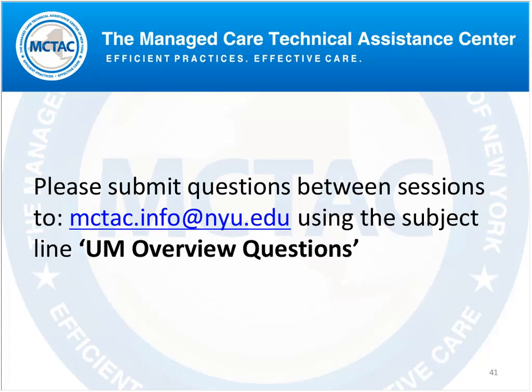Will there be guidelines for intermediate inpatient care that are different from acute care hospitals? If referring to observational status — between an emergency room admission and an inpatient admission — yes, there certainly will be guidelines surrounding that. If you're referring to other intermediate levels of care, could you explain that in a little bit more detail?